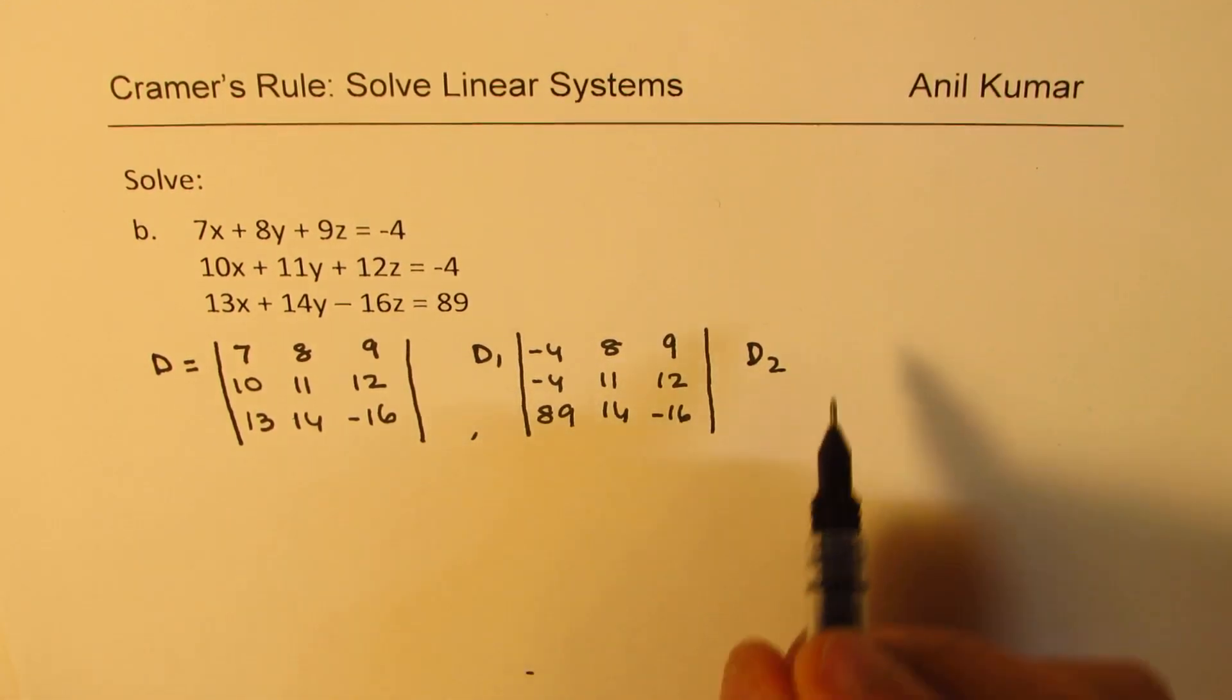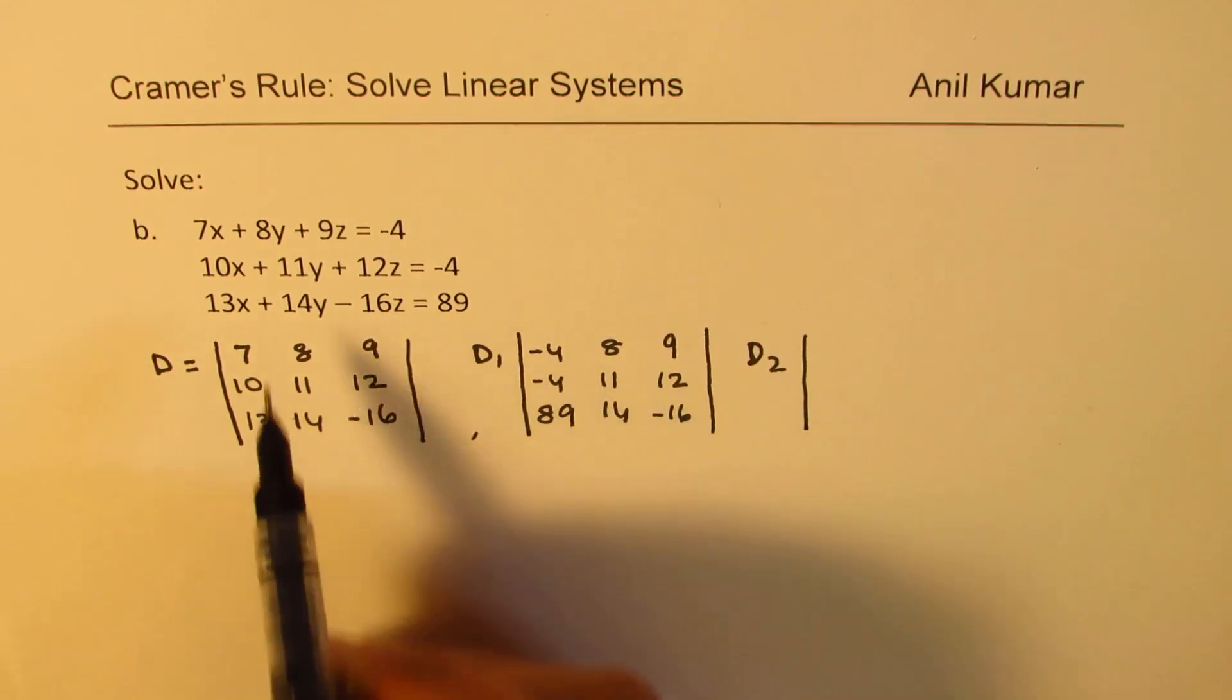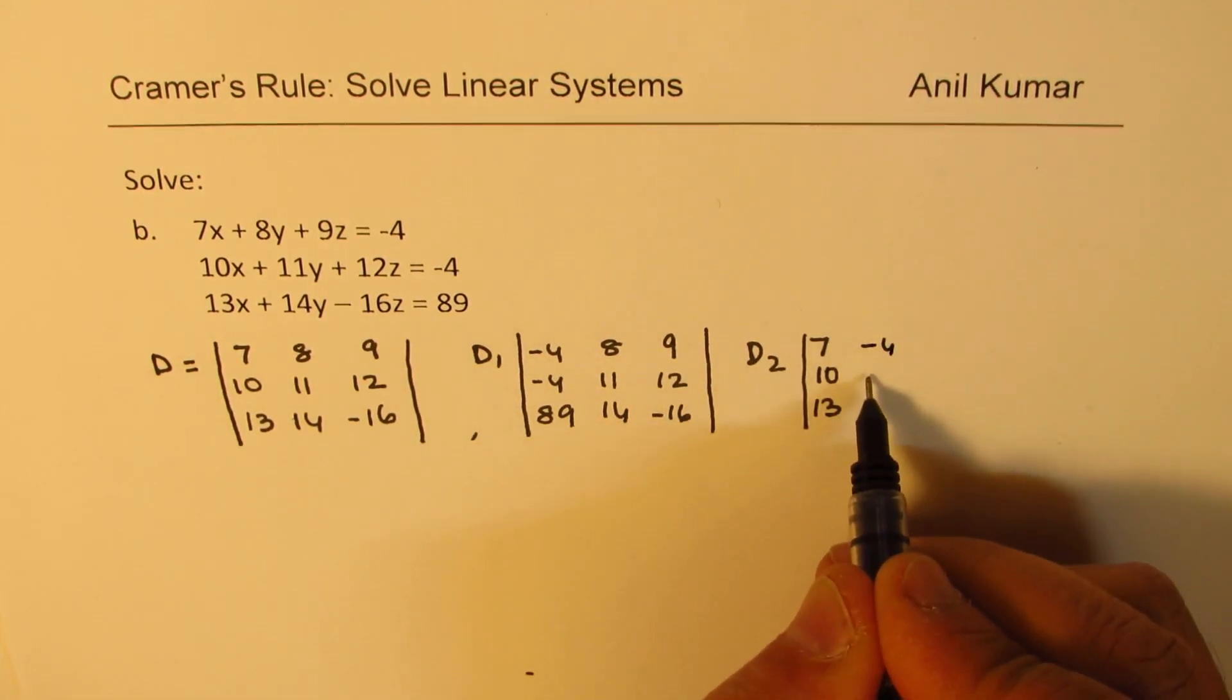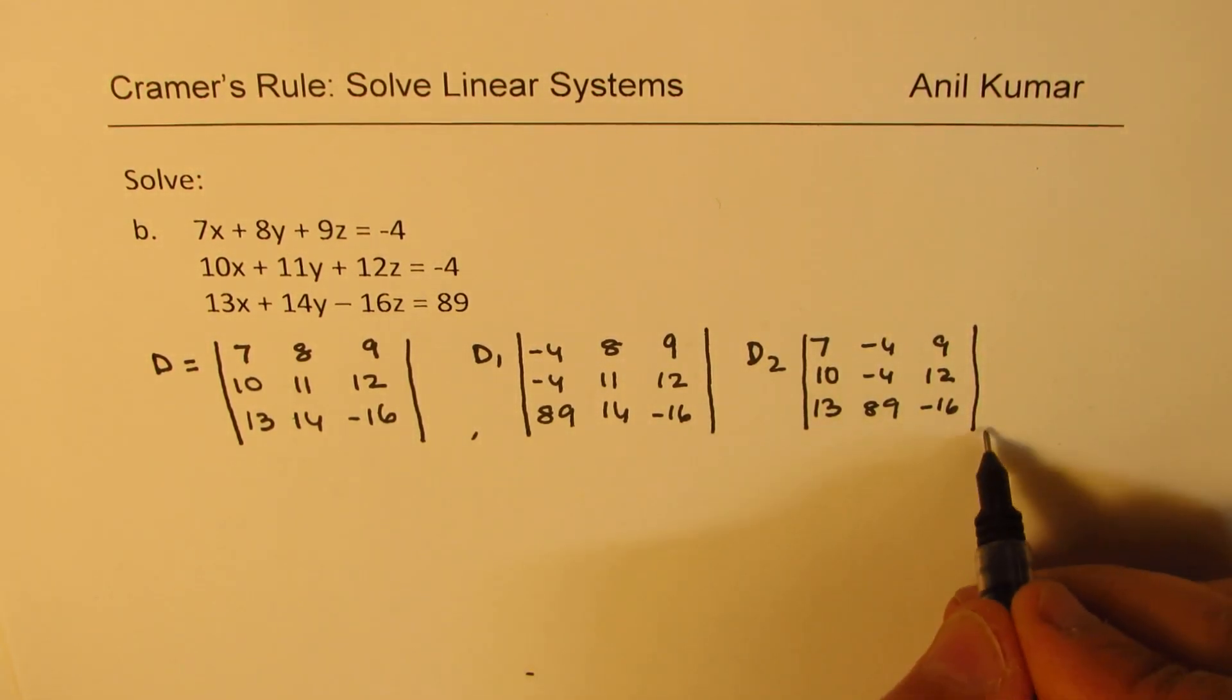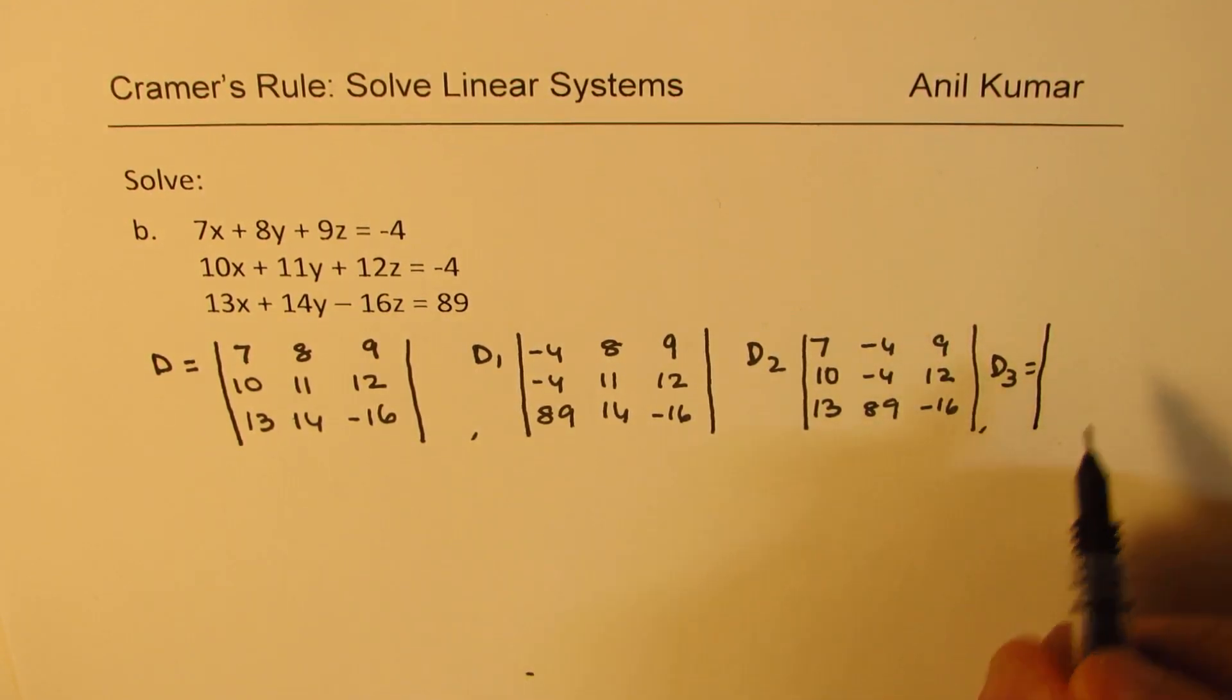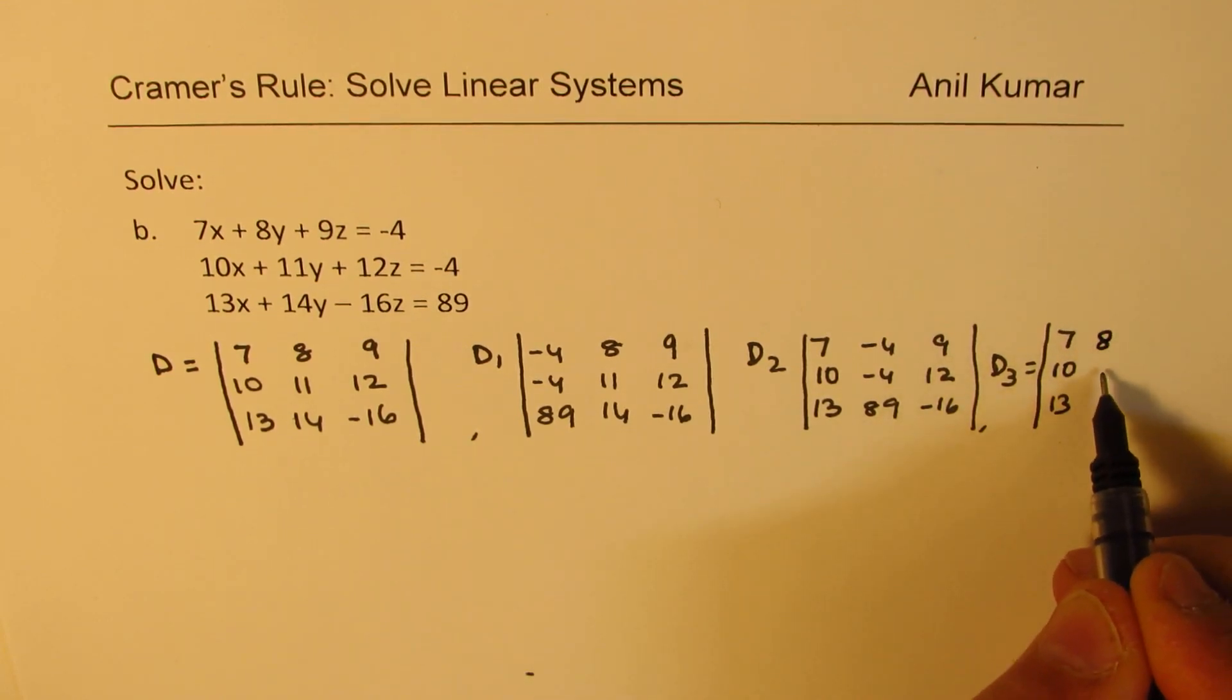The second or third determinant will be when we'll actually replace the y coefficients this time, retaining the others. So, it is 7, 10 and 13 and we'll put -4, -4 and 89 as the coefficients of y and then retain the other values as such. Now, the last coefficient is D3. I'm just squeezing it in here since we have very limited space. So, we have here 7, 10 and 13 and we have 8, 11.